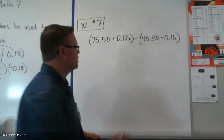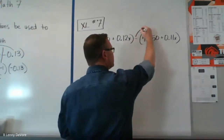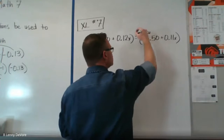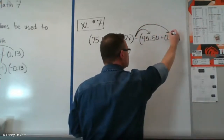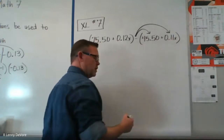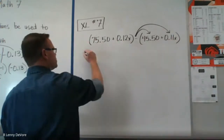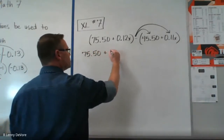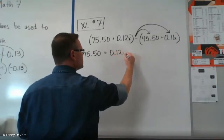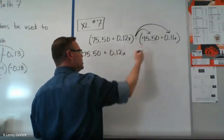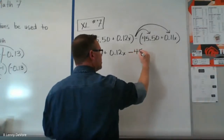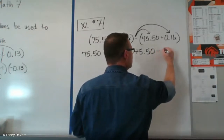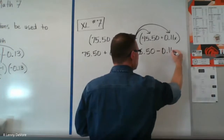Again, we're going to use the opposite approach. This turns everything in these parentheses to its opposite. So the opposite of positive $45.50 is negative $45.50, and the opposite of positive 0.11x is negative 0.11x. These first terms stay the same, so rewriting: $75.50 plus 0.12x, then minus $45.50, minus 0.11x.